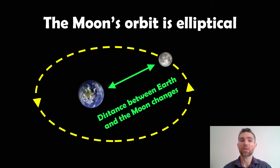Now, the other key aspect is that the Moon's orbit is elliptical. So, this means that as the Moon goes around the Earth, the distance between the two changes. So, the Moon will get closer and then further away.